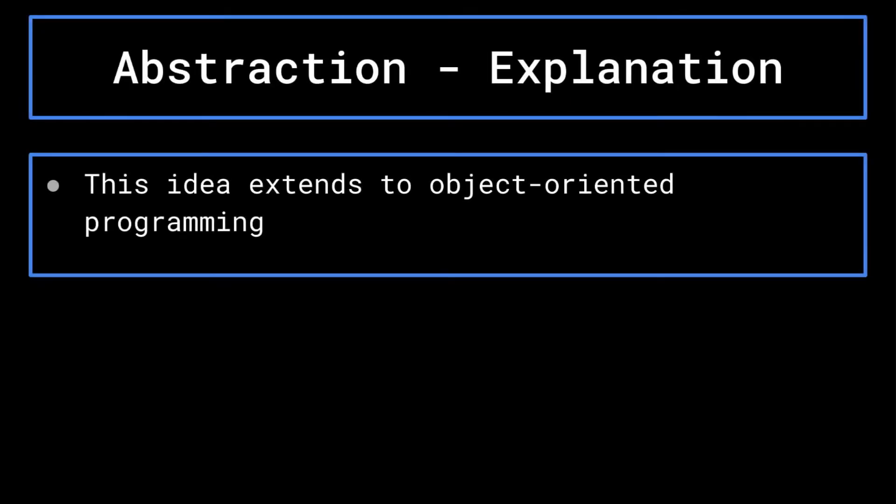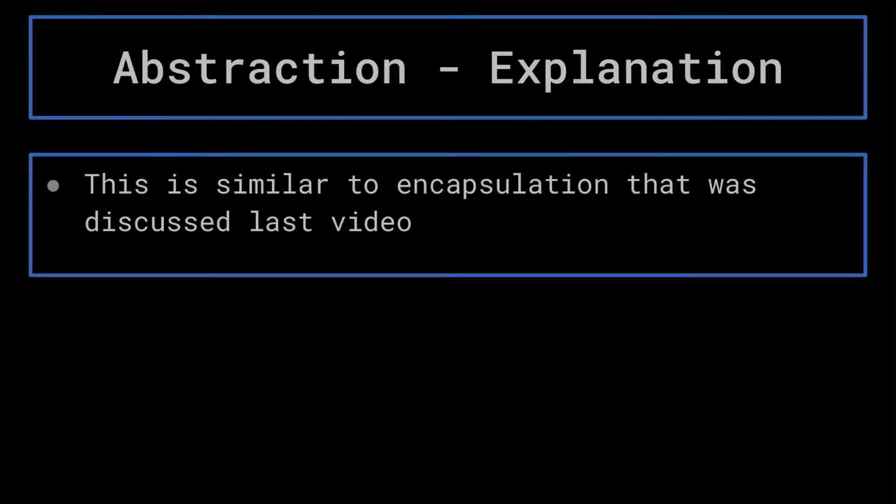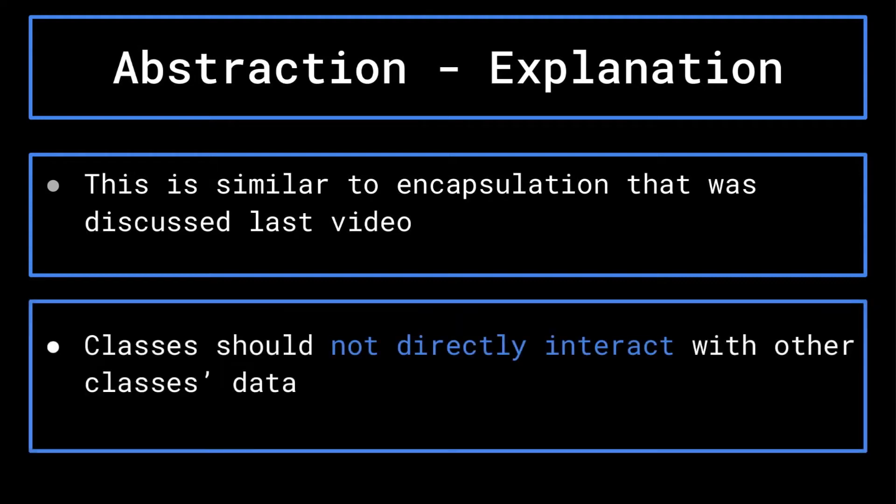This idea extends to object oriented programming. The classes you create should act like your car. Users of your classes should not have to worry about the exact inner details of said classes. This idea is similar to that of encapsulation that we discussed last episode. In that episode, we mentioned how you should not have classes directly interact with the data stored within other classes. Rather, have them use the classes methods to access their data.